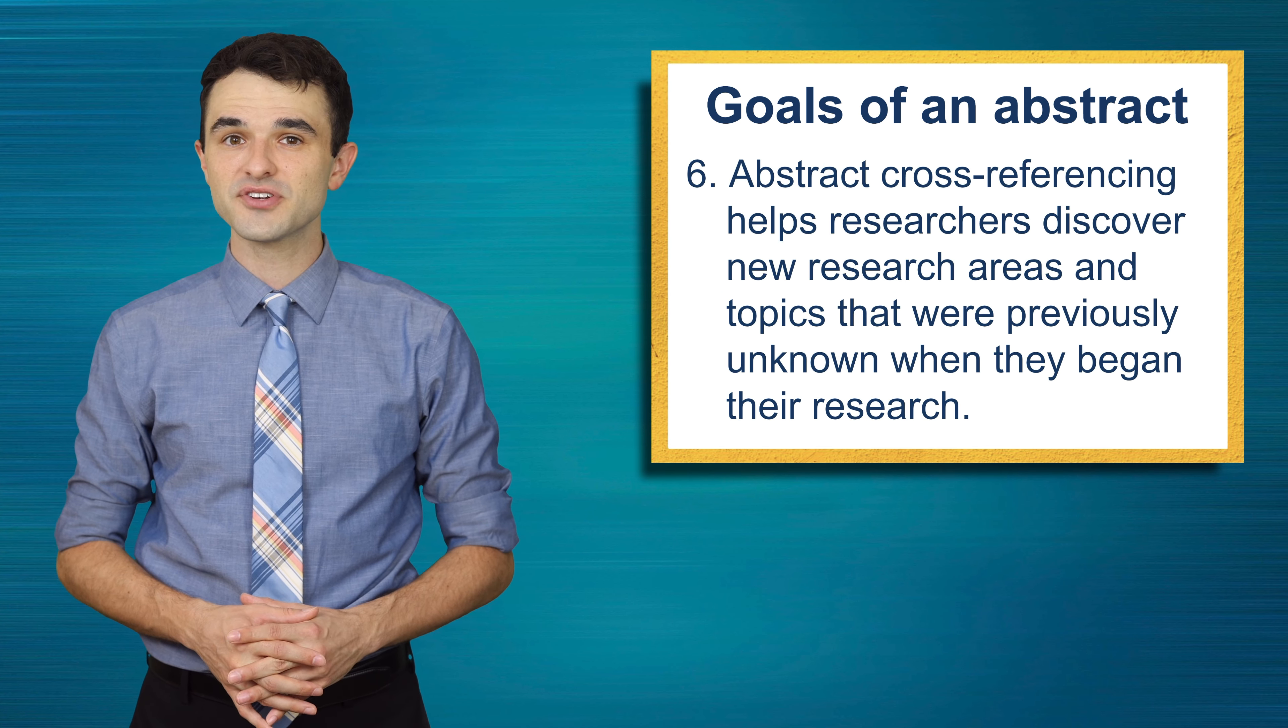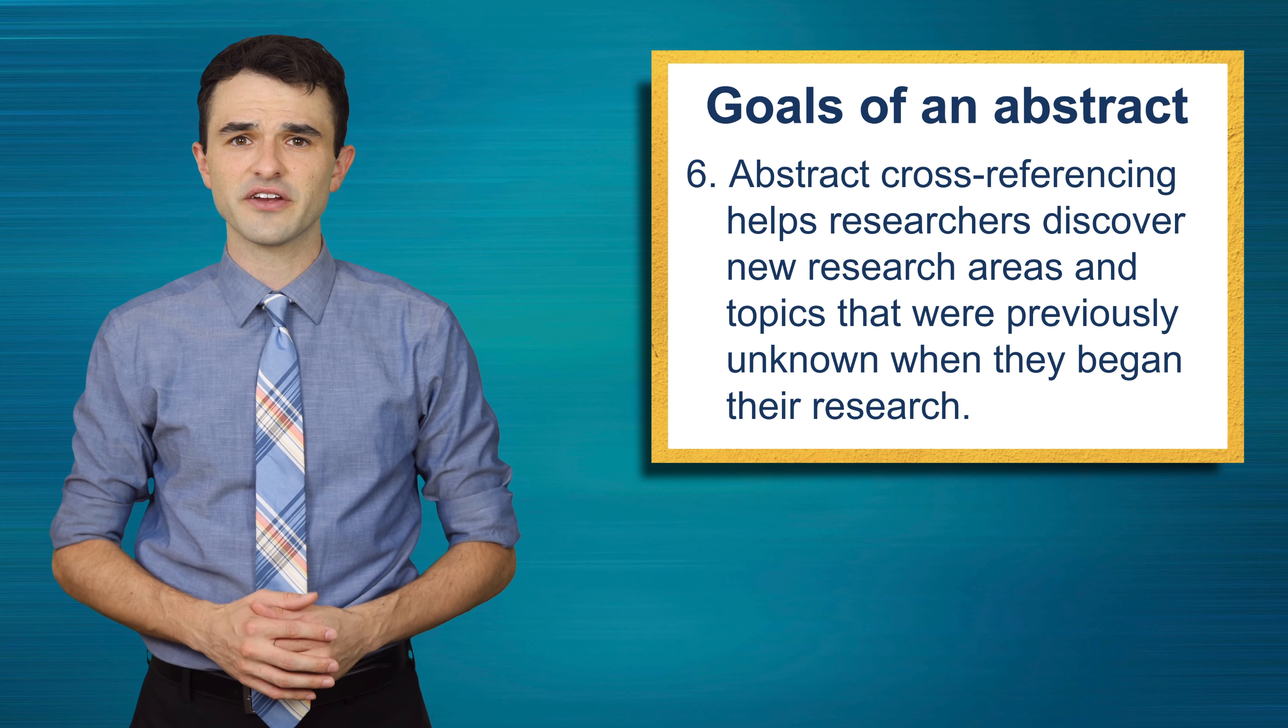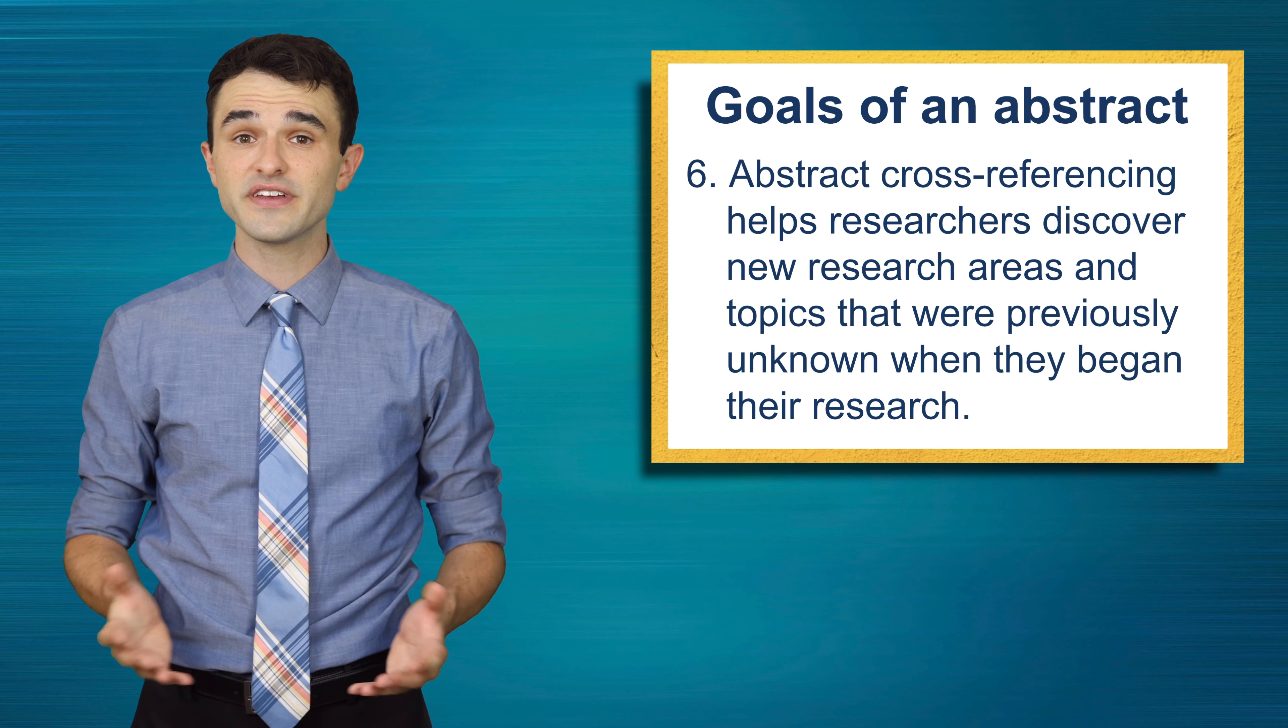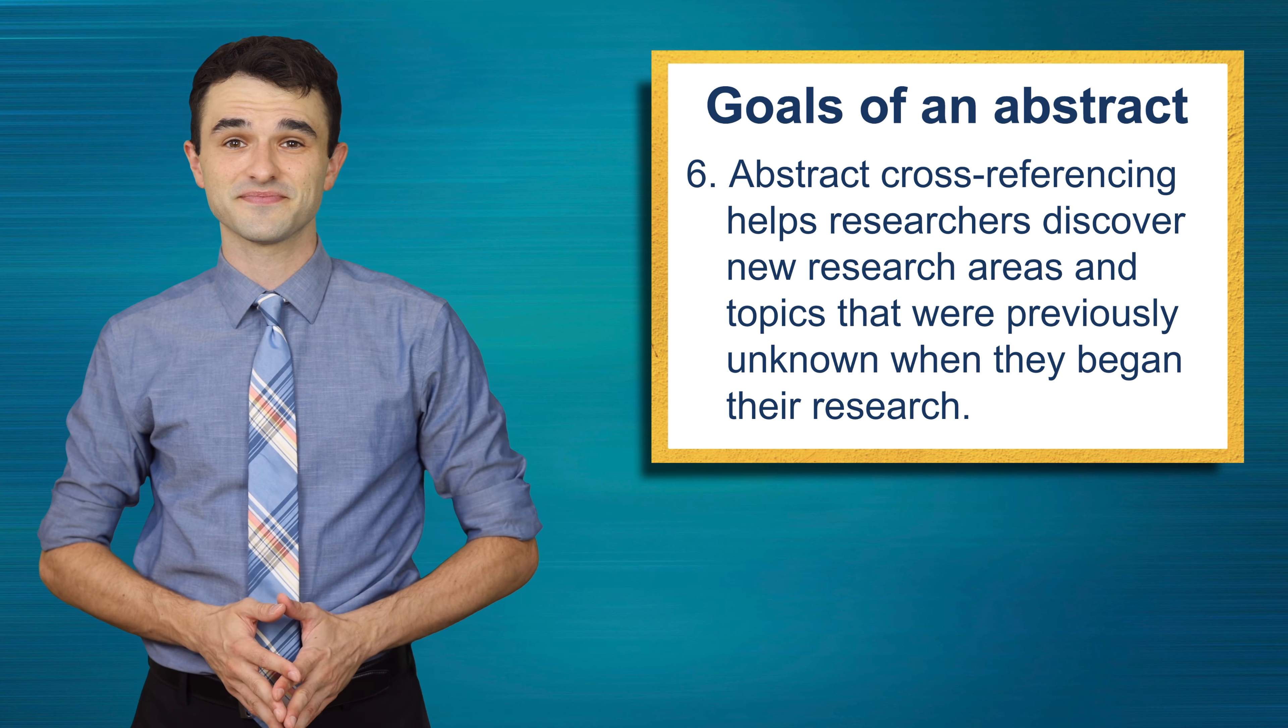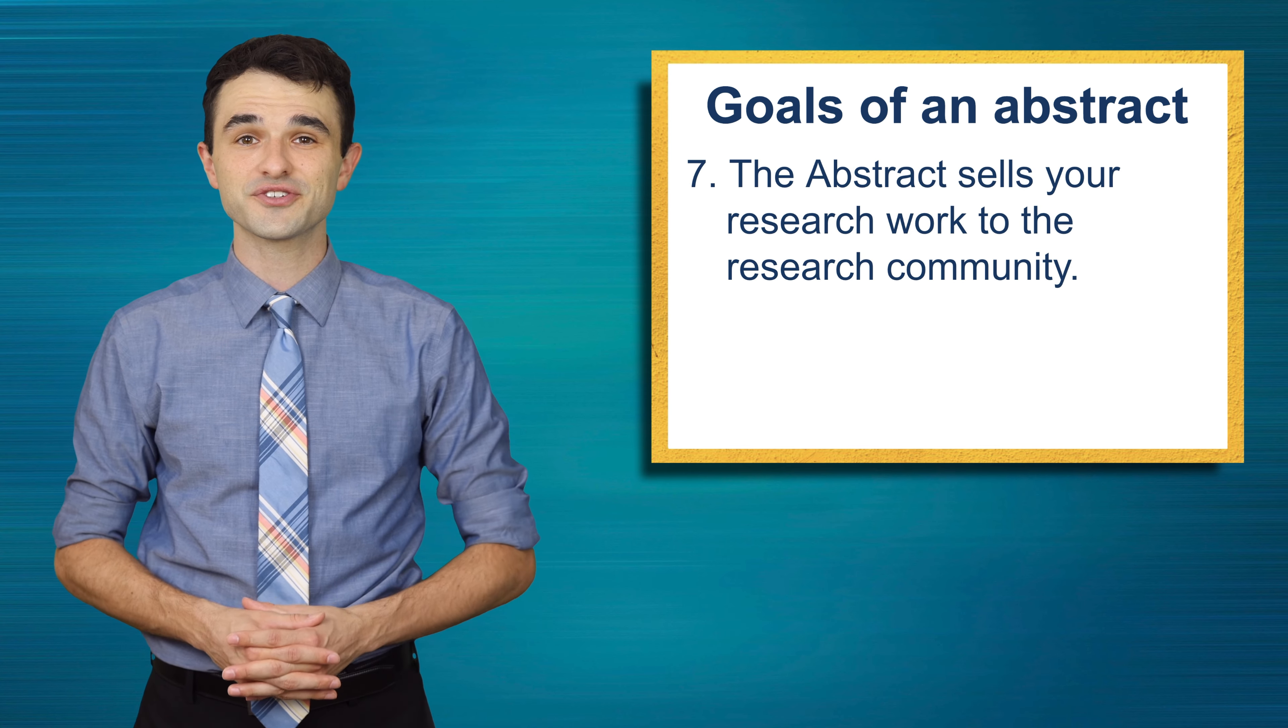Goal 6: Abstract cross-referencing. This helps researchers discover new research areas and topics that were previously unknown when they began their research. Goal 7: The abstract sells your research work to the research community.